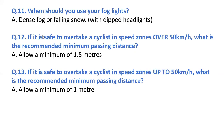Question twelve: if it is safe to overtake a cyclist in speed zones over 50 km/h, what is the recommended minimum passing distance? Answer: allow a minimum of 1.5 meters.